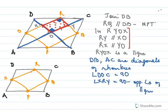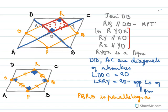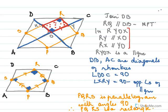Since angle DOC is 90° and RYOX is a parallelogram, angle XRY is also 90° (opposite angles of parallelogram). We know PQRS is a parallelogram (proved earlier). With angle R equal to 90°, opposite angles are also 90°, and adjacent angles sum to 180° so all angles are 90°. A parallelogram with all angles 90° is a rectangle, hence PQRS is a rectangle. Proved.